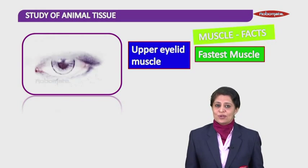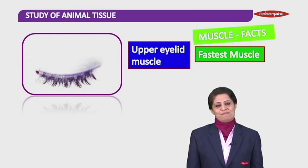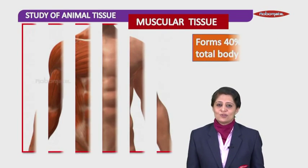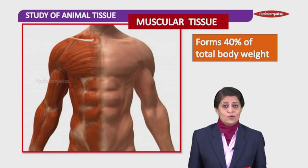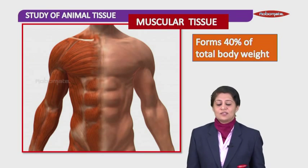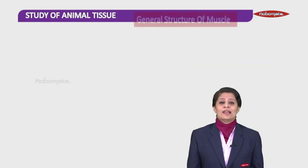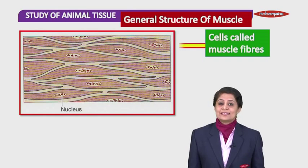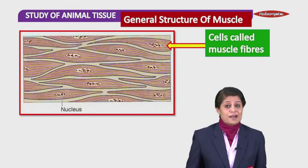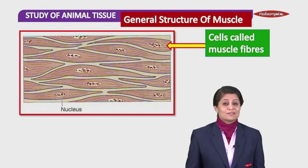I hope you remember all of this because I'm going to be coming back with all of these questions very soon. Muscular tissue comprises of 40% of your total body weight — that's quite huge. Around 40% of your body weight is just muscles. So how do these muscle cells look like? These cells are known as muscle fibers — because they're long thin thread-like structures.